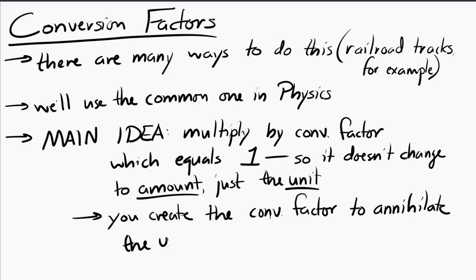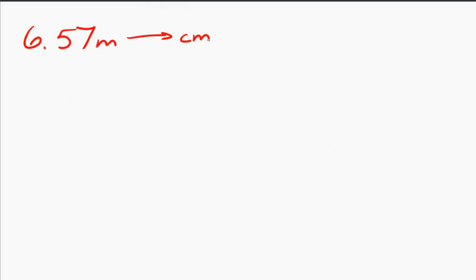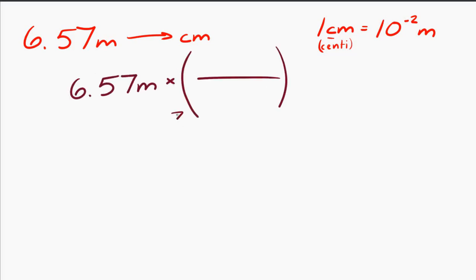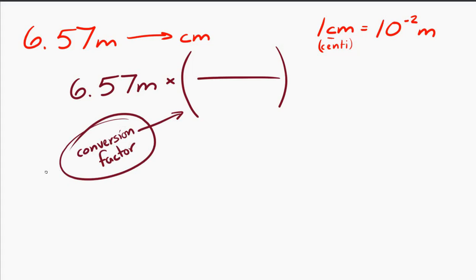For example, let's take 6.57 meters and convert that to centimeters. We know that 1 centimeter is the same as 10 to the minus 2 meters — the centi prefix means 10 to the minus 2. So we build a conversion factor that equals 1, meaning it has the same amount of stuff on the top and bottom, just different units. To annihilate the meters, we put the meters unit in the denominator of the conversion factor so it cancels out, and centimeters go in the numerator so they survive.